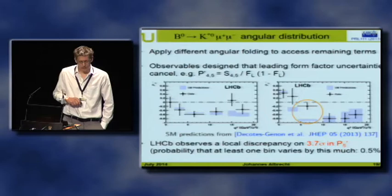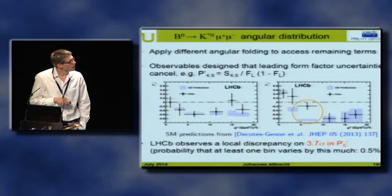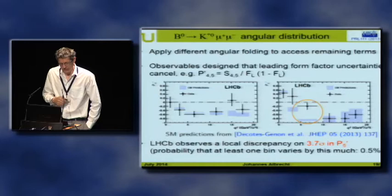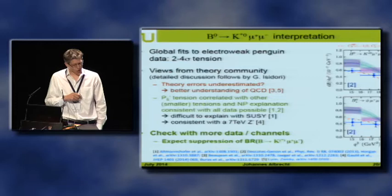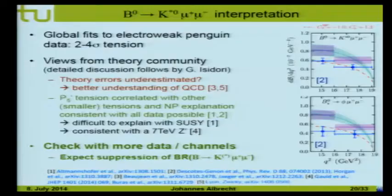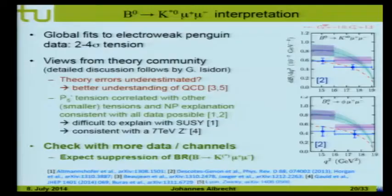This discrepancy can be interpreted as a potential new physics signal. If it were new physics, you would want to see a consistent pattern in different electric penguin modes. A global fit to all electric penguin data shows a global tension between 2 and 4 sigma, depending on exact inputs and treatment of form factor uncertainties. The first question is whether we really understand our theory error bars. Progress has been made in understanding the QCD contributions. More optimistically, the global fits are consistent with a change in Wilson coefficient C9 — adding a new physics contribution to C9 — which gives improved agreement between data and prediction.